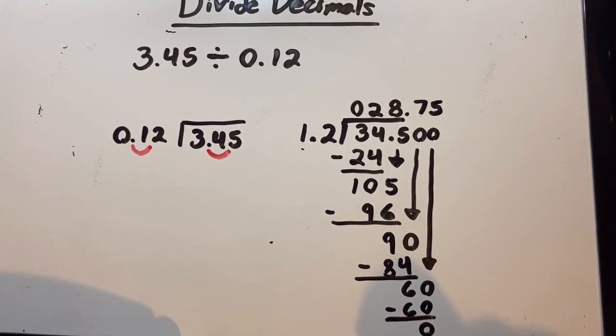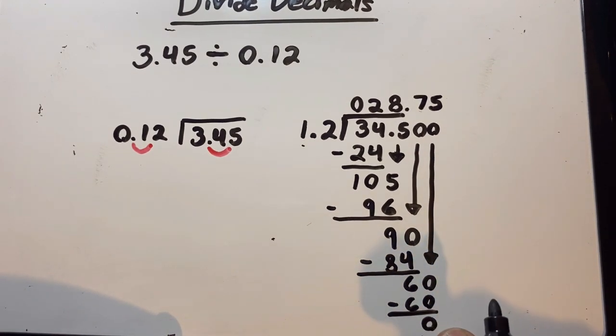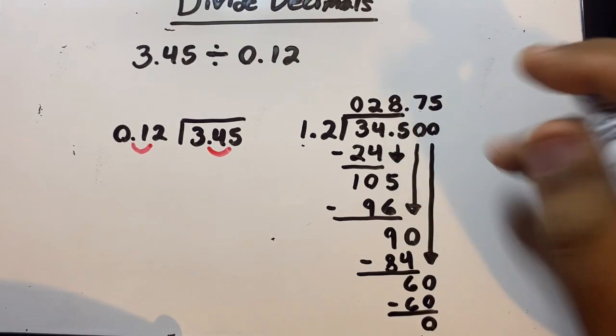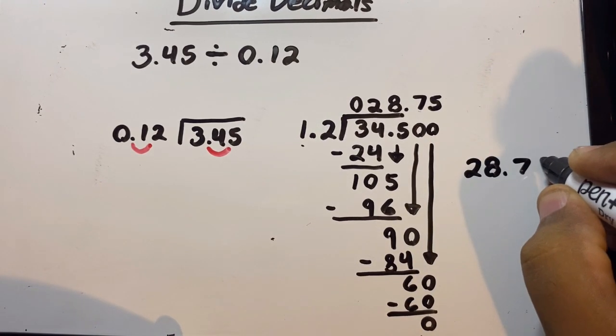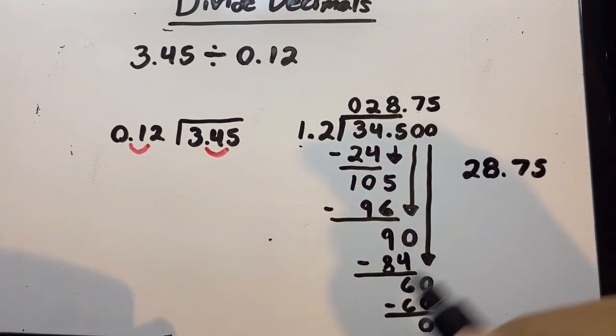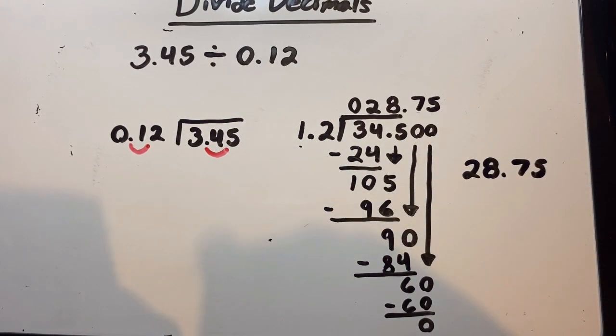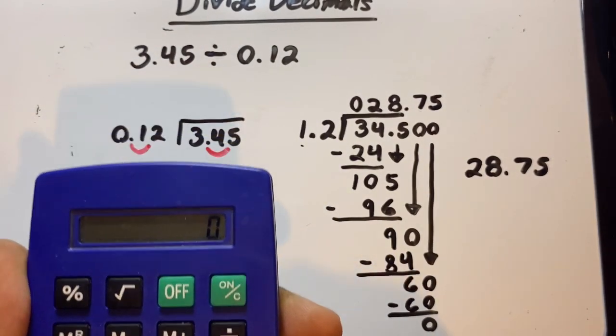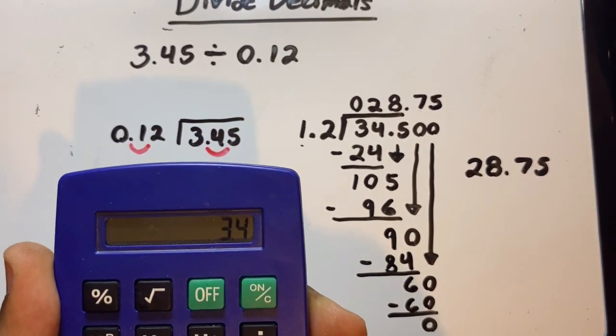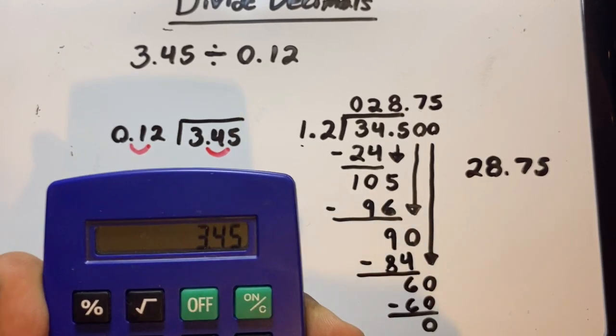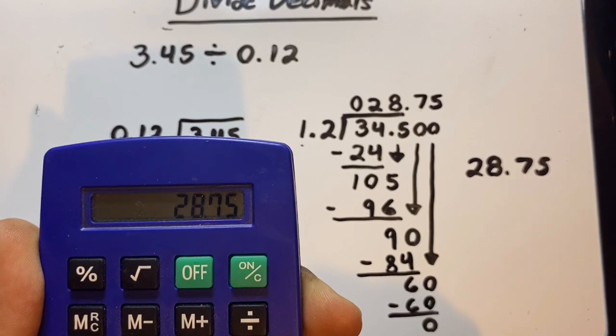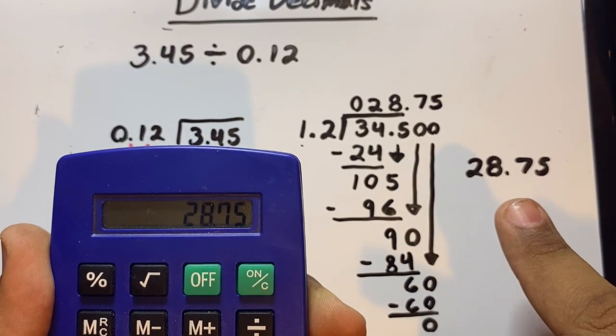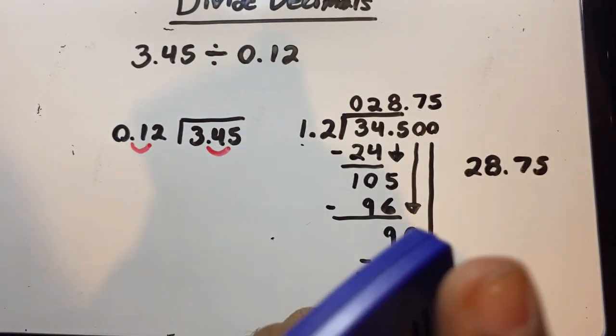And because our equation has no remainder, this is the answer—it's going to be 28.75. Now, when it comes to dividing decimals, I always like to confirm my answer. So let's try it: I did 3.45 divided by 0.12, and the answer is 28.75. That's what I got here, so I confirmed my answer, and my method works.